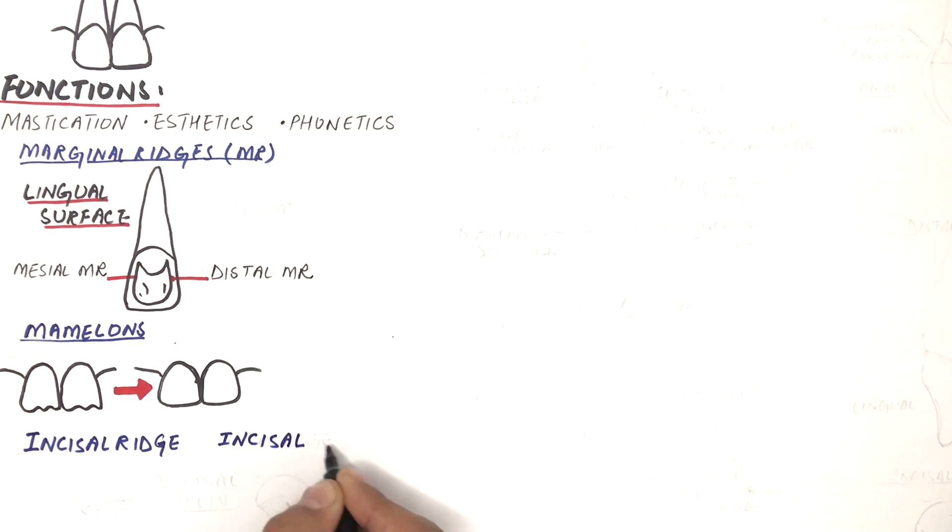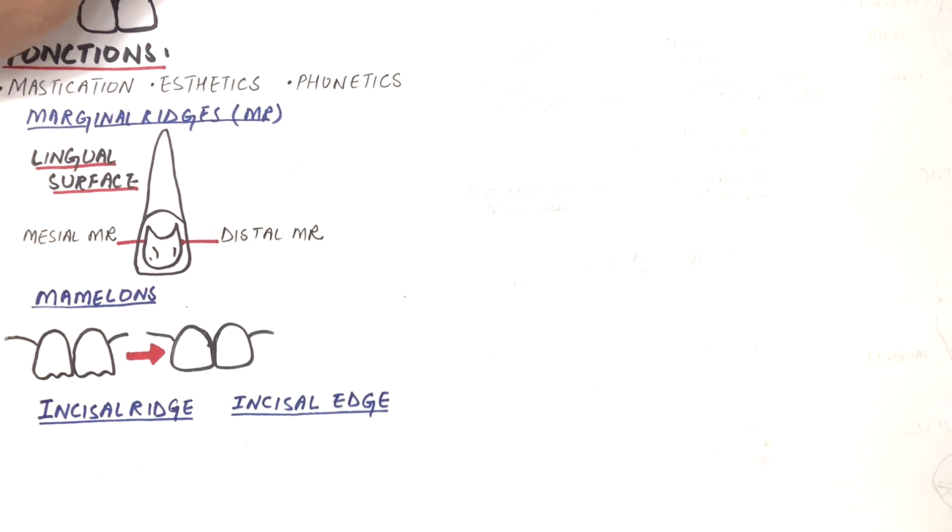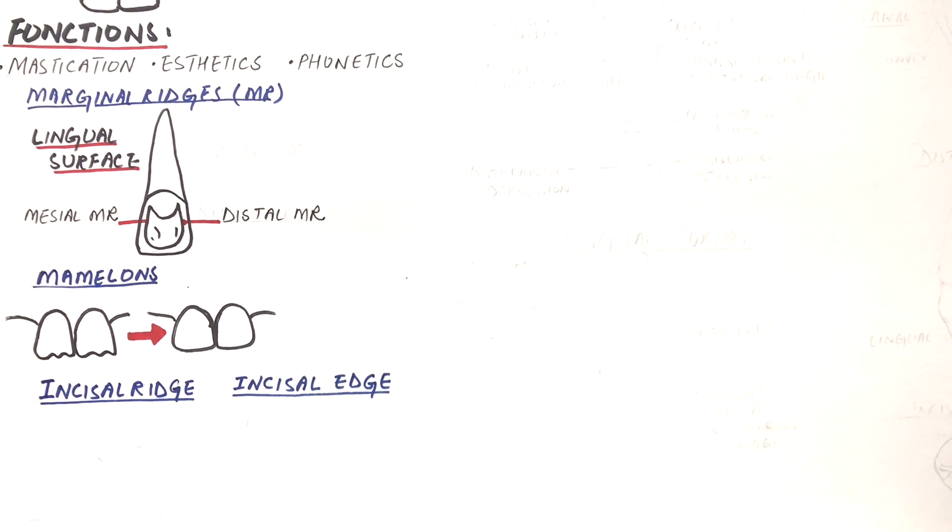We must understand the difference between an incisal ridge and an incisal edge. The incisal ridge is that portion of the crown which makes up the complete incisal portion. When an incisor is newly erupted, the incisal portion is rounded and it merges with the mesioincisal and distoincisal line angles and the labial and lingual surfaces of a tooth.